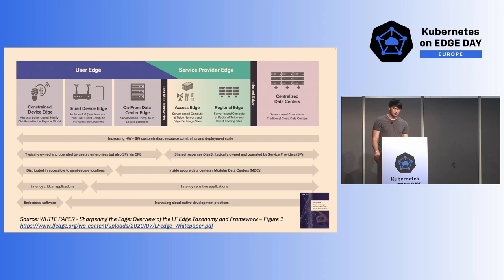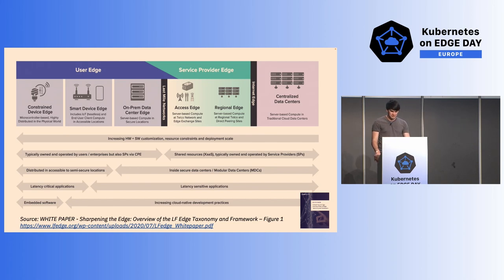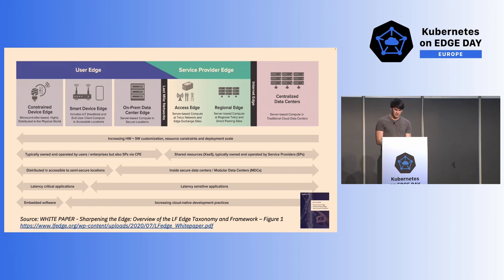It helps to visualize edge computing through the continuum of physical infrastructure from centralized data centers to devices. To the far right of the diagram, centralized data centers represent cloud-based compute, where resources are practically unlimited, whereas device resources are inherently constrained. Moving along the continuum, the first main edge tier is the service provider edge, which is distributed and brings edge computing resources much closer to end users. Moving further, we have the user edge, which represents a highly diverse mixture of resources. As a general rule, the closer edge compute resources get to the physical world, the more constrained and specialized they become.